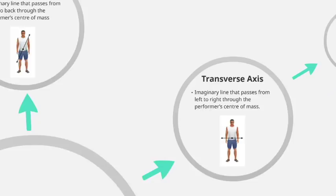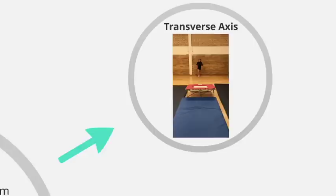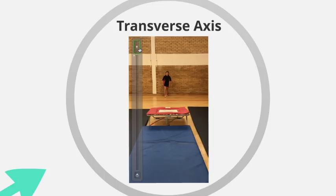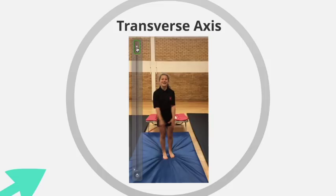Moving on, we have the transverse axis — an imaginary line that passes from left to right through the performer's centre of mass. We can see the centre of mass identified in the performer, with this line passing through the side of the performer from left to right. A key example of rotation about the transverse axis in sport is the somersault. As the performer executes a somersault, they are rotating in a direction that occurs on the transverse axis.